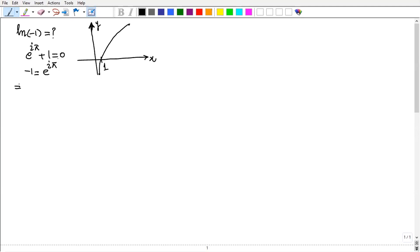Take log both the sides. Log minus 1 equals log e to the i pi and log and e cancelled. So i pi.